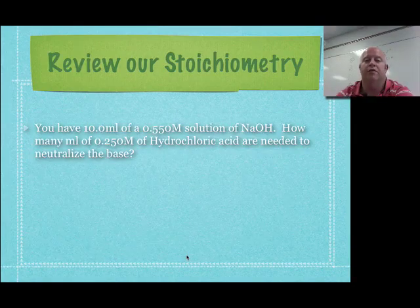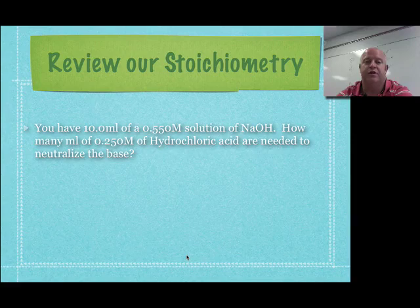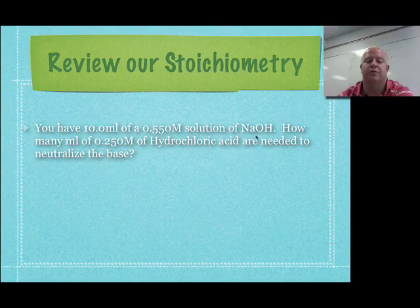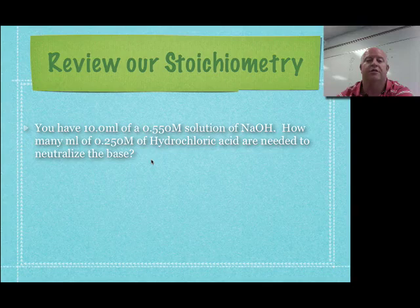We're going to do a little review of stoichiometry, because to do neutralization you have to be able to go back and do some of that stoichiometry. Here's our first practice problem: you have 10 milliliters of a 0.55 molar solution of sodium hydroxide. How many milliliters of 0.25 molar hydrochloric acid are needed to neutralize the base? Basically, how do you get them equal?